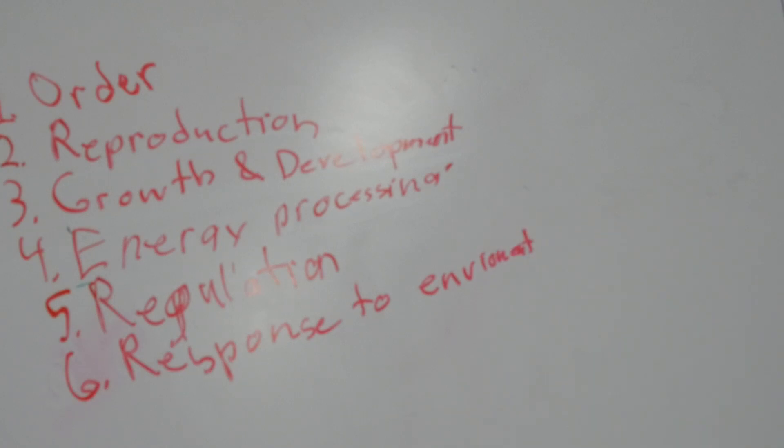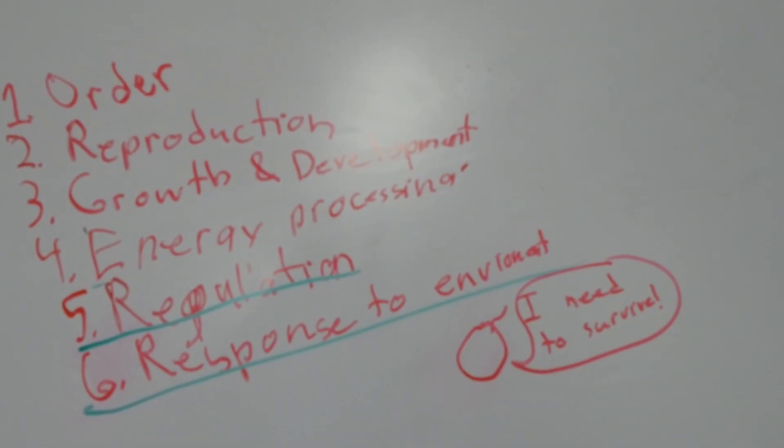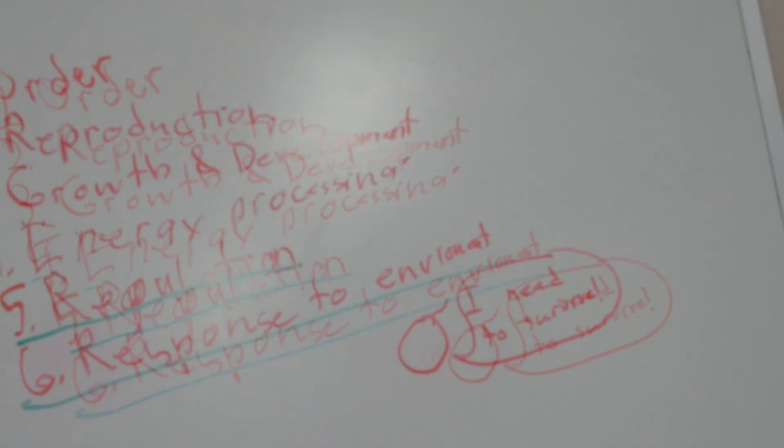Newly fertilized zygotes need to survive somehow, and the only way that is going to work out long term is if they implant in the uterine wall. As I quickly discovered when researching for this video, implantation is kind of complicated,